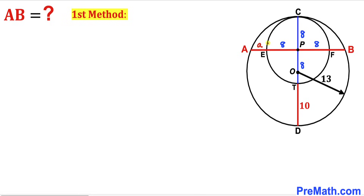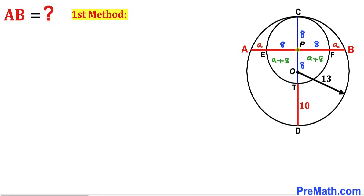Let's label the tiny segment AE as lowercase a, so FB is also a. Then segment AP equals a plus 8, and likewise segment BP equals a plus 8. We know segment CP is 8 units, and segment PD is 8 plus 10, giving us 18 units.